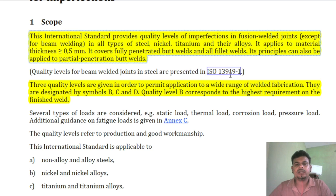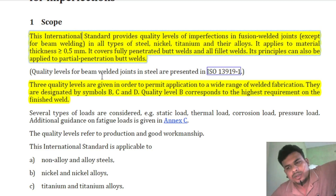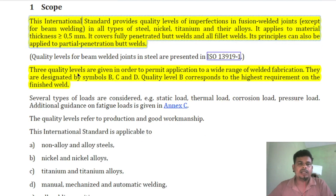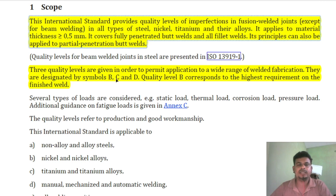For beam welding, we need to refer to a separate standard. Quality levels for beam welded joints in steel are presented in ISO 13919-1. Three quality levels are given in order to permit application to a wide range of weld fabrication. These three quality levels are designated by symbols B, C and D.